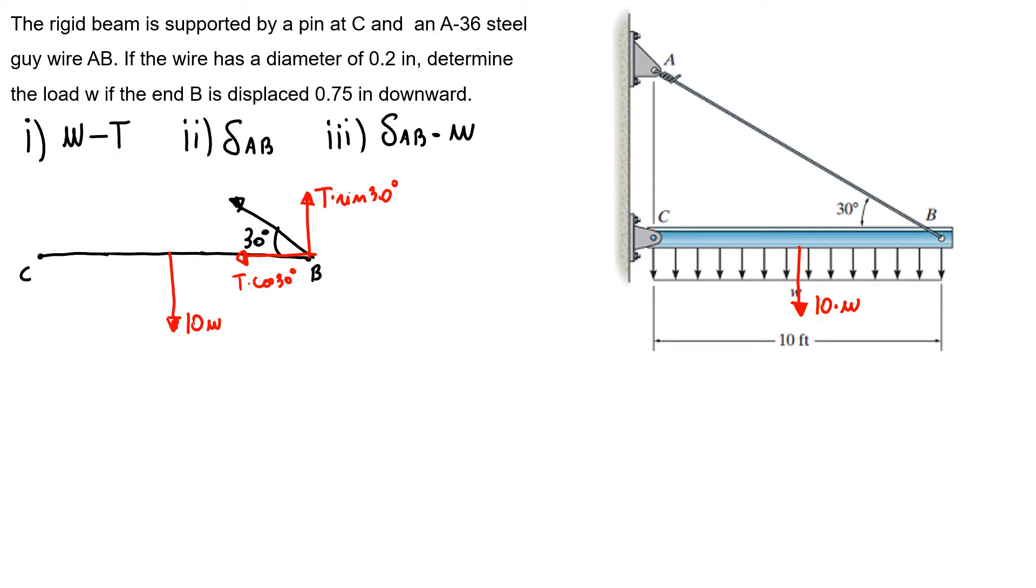So to discover my relationship, I will do the sum of moments around C, counterclockwise is positive, equals zero. So minus 10W times 5 because it's in the middle, plus my T sine of 30 times 10 feet equals zero. So I know that 50W is the same as 5T. So my T is the same as 10W. I'll keep this information because it will be useful to finish our exercise.